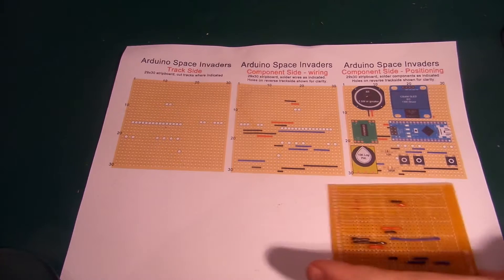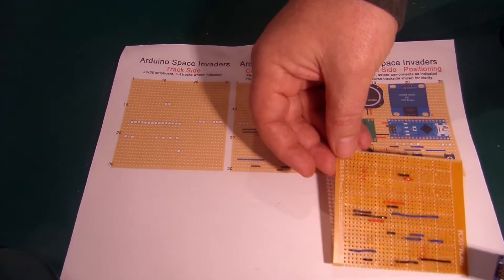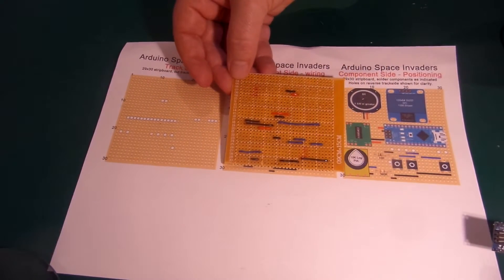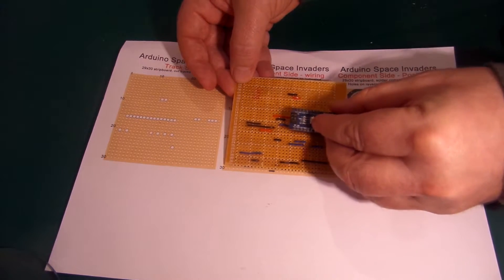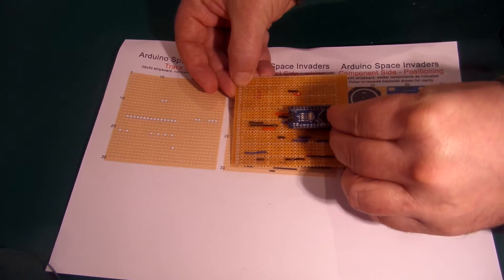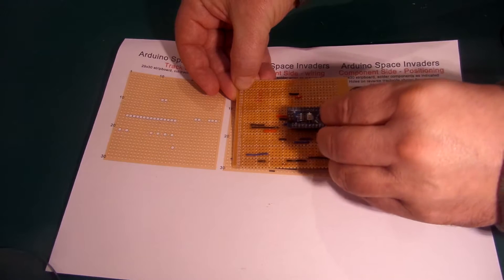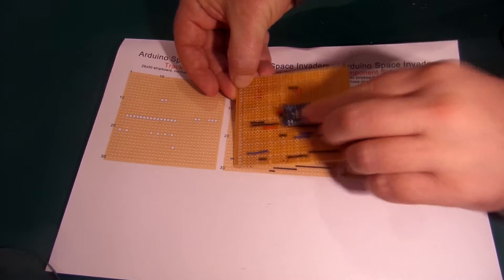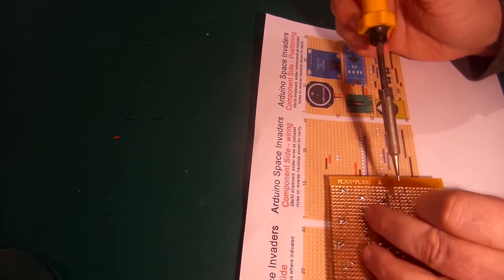With all the wires added and double checked for correctness we can move on to the actual components. Again staying on the same side of the board as the wires we'll start to add and test them. We'll start with the Arduino Nano taking special, extra special care to position it in the exact position as shown on the third diagram. Getting this wrong could easily destroy your Nano. Once in position I solder just the connections required for this project and the rest I leave alone.